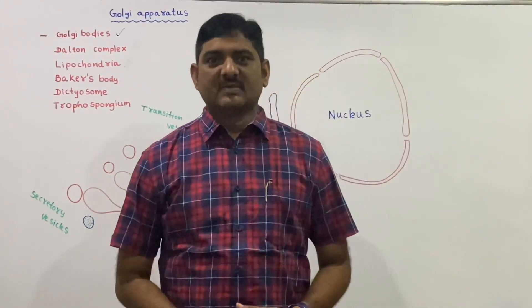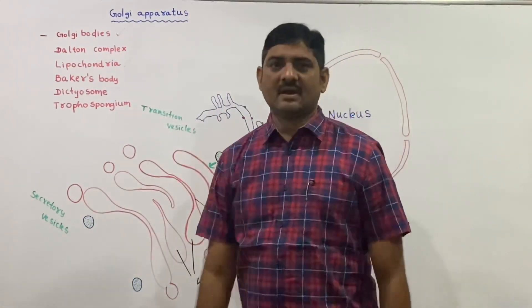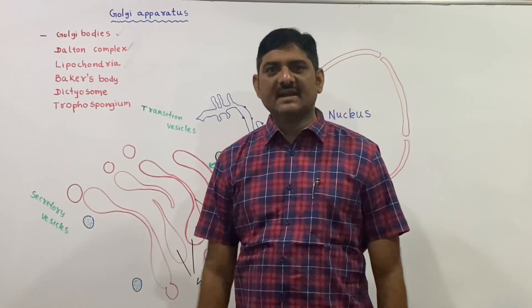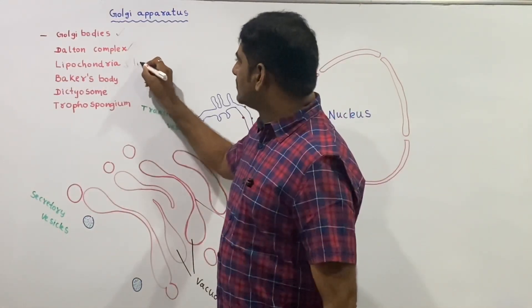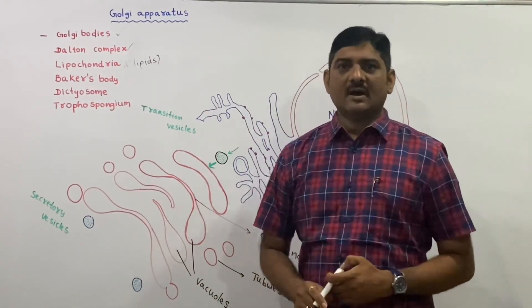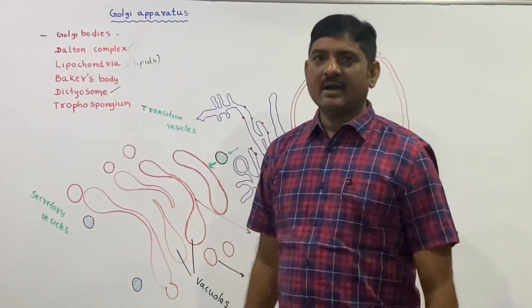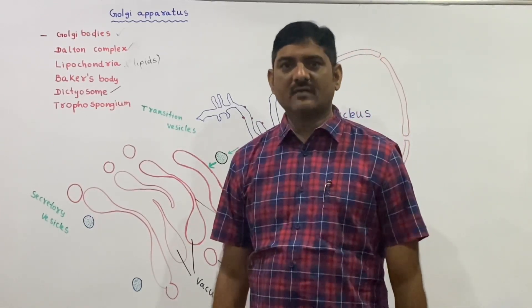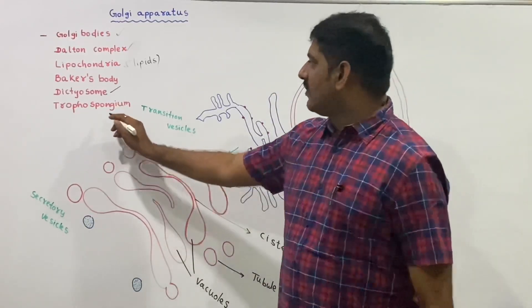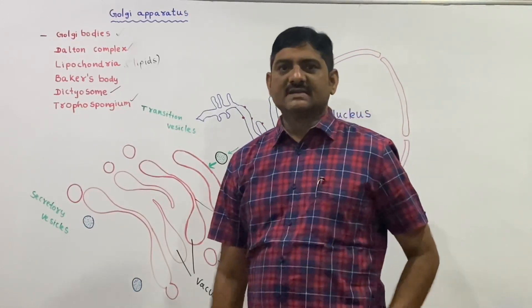Right, here is the Golgi apparatus. We are going to discuss the Golgi apparatus, otherwise called Golgi bodies, Dalton's complex, or lipochondria, because it is rich with lipids. In plant cells, the Golgi complex is called dictyosomes. Their interconnections are called trophospongium.